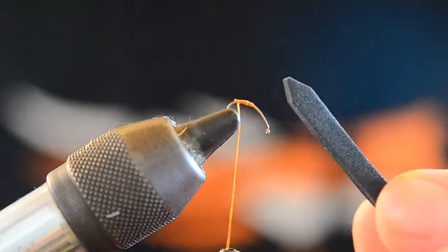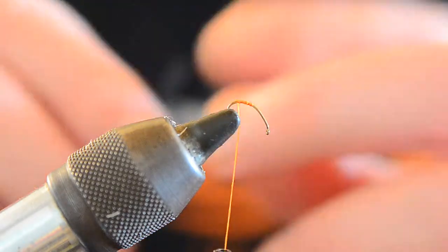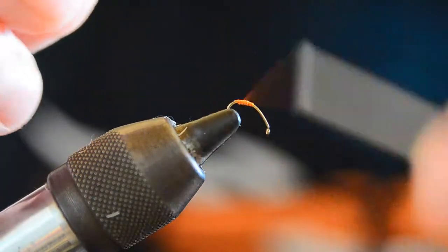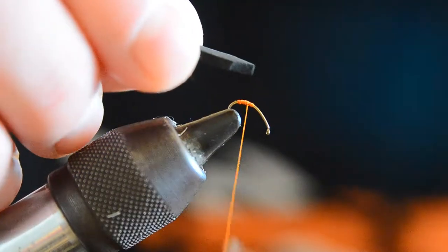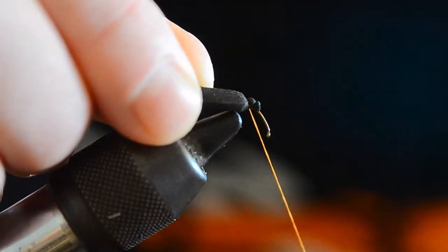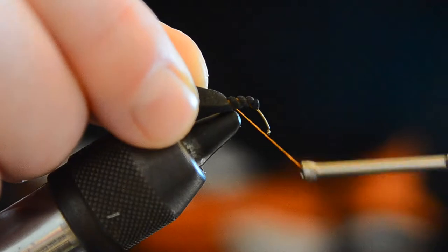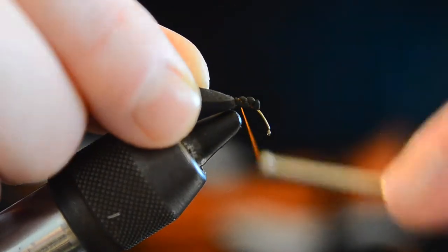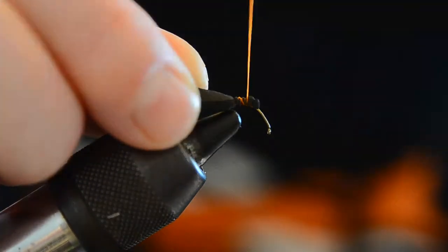I usually take my foam and make a little point in the end of it. It just gives it a nice little tie-in spot to reduce some of the bulk. I'll catch it and just tie it down onto the back of this hook here.